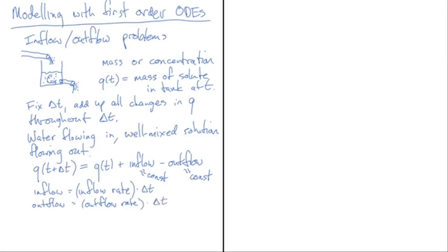The equals sign isn't quite exact — it should be approximately equal because inflow and outflow rates may change with time. In particular, the outflow rate changes as the concentration inside changes. But for very small intervals of time, the change in that concentration will be negligible, and we can ignore it in the limit as delta t goes to zero.